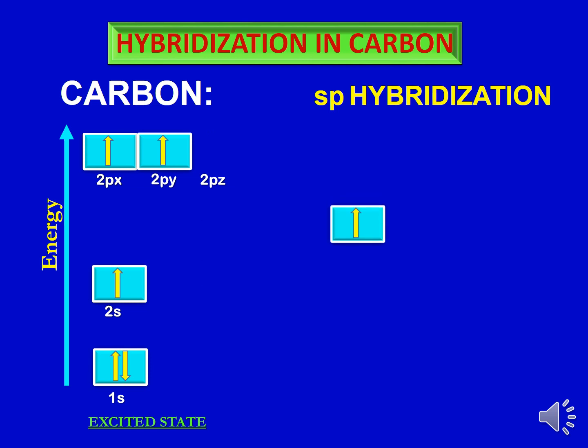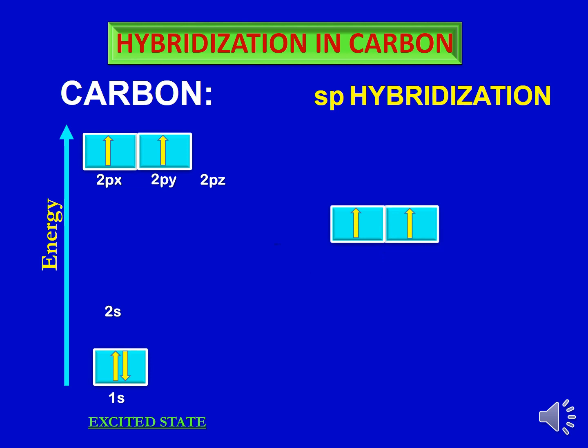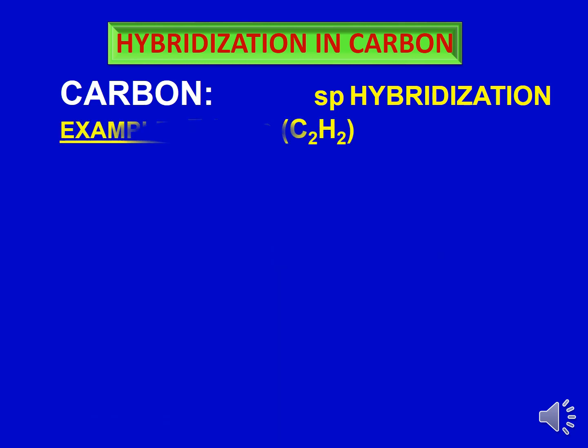Carbon can also be SP hybridized. In SP hybridization, one p orbital combines with one s orbital to form two SP hybridized orbitals. We are mixing two atomic orbitals to get two SP hybridized orbitals, and we are left with two unhybridized p orbitals, each having one electron. An example of a carbon with SP hybridization is ethyne.